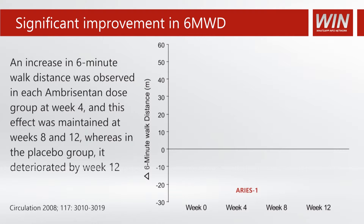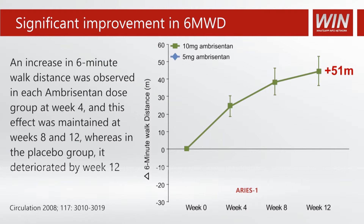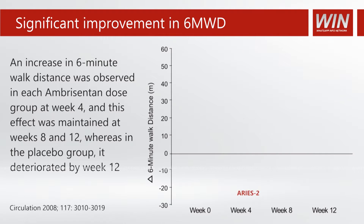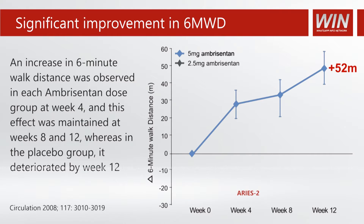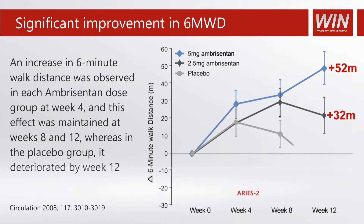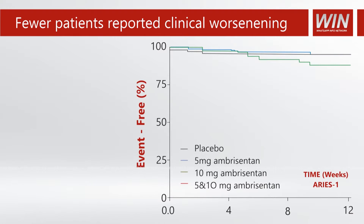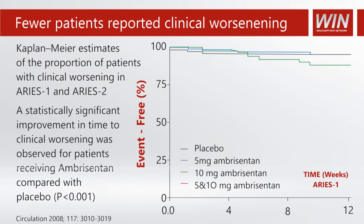The clinical trials conducted for ambrisentan are the ARIES group of trials. These two trials tested various doses from 2.5 to 10 milligrams of ambrisentan and showed a significant improvement in the six-minute walking distance. The 10 milligram dose is the most effective and significantly improves the six-minute walking distance.